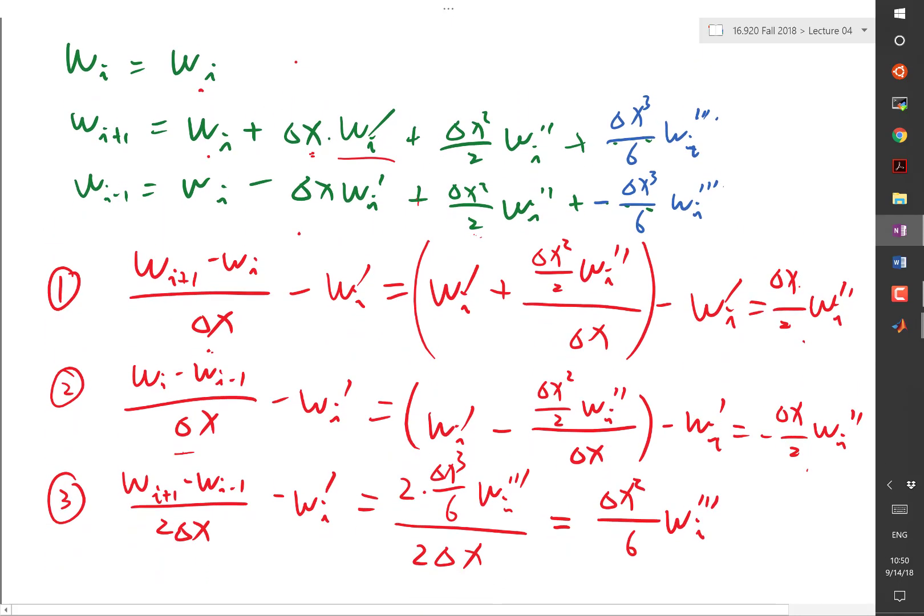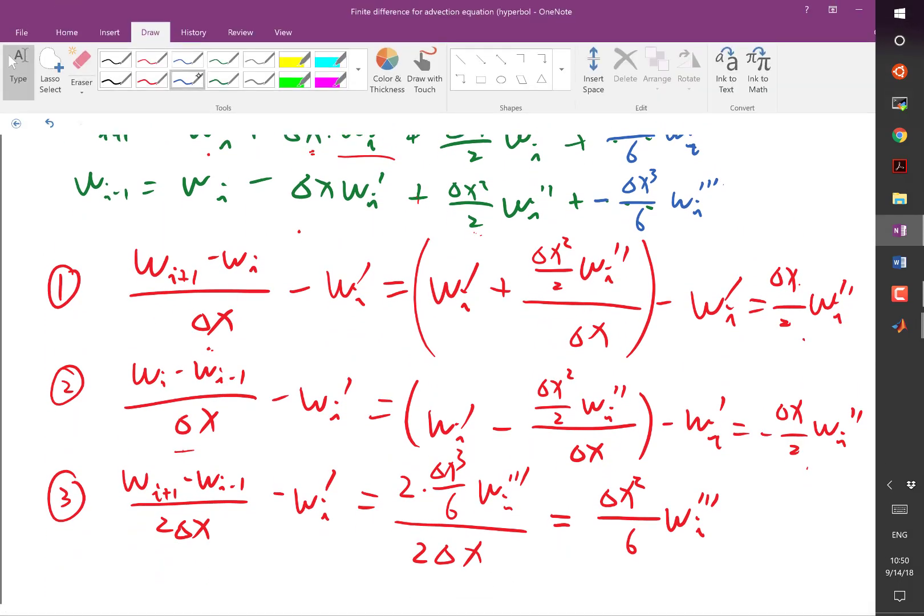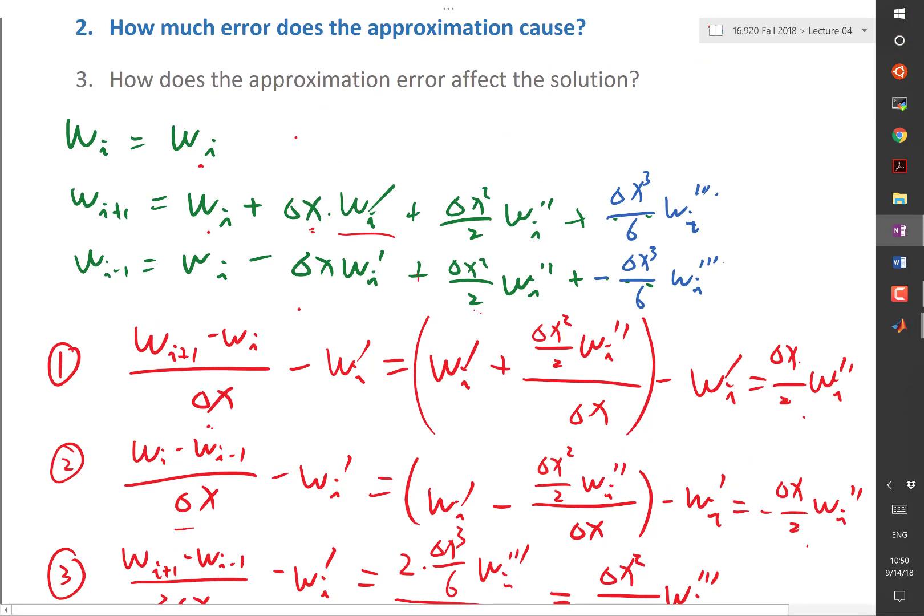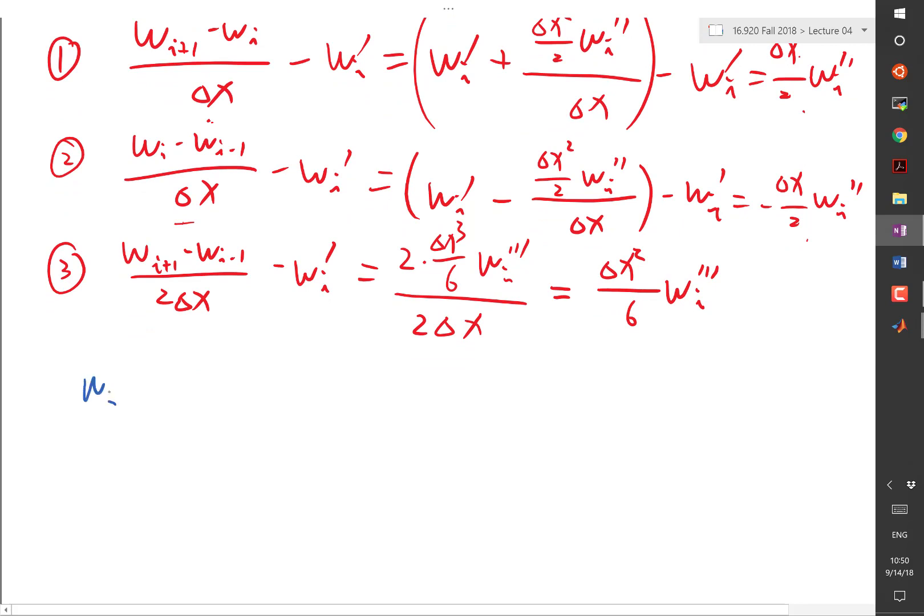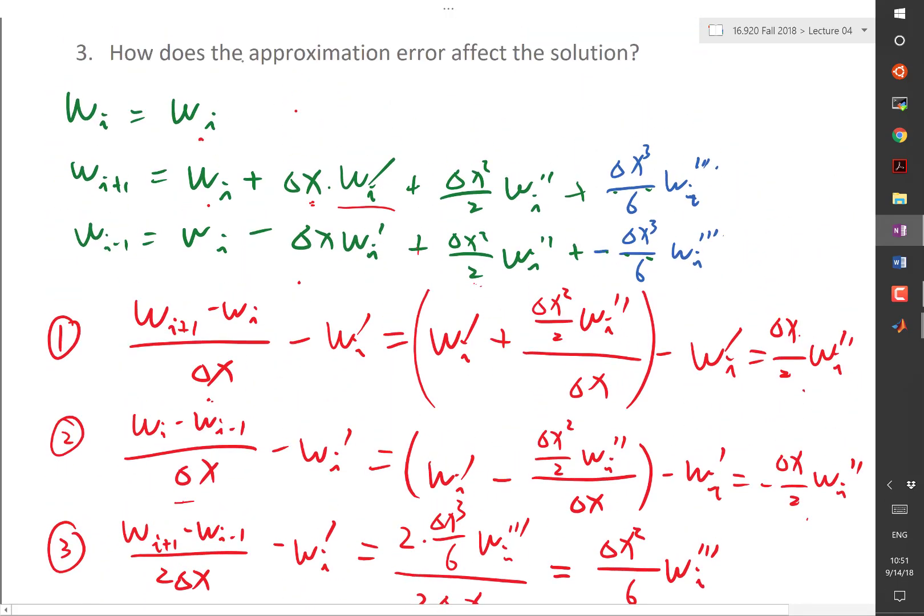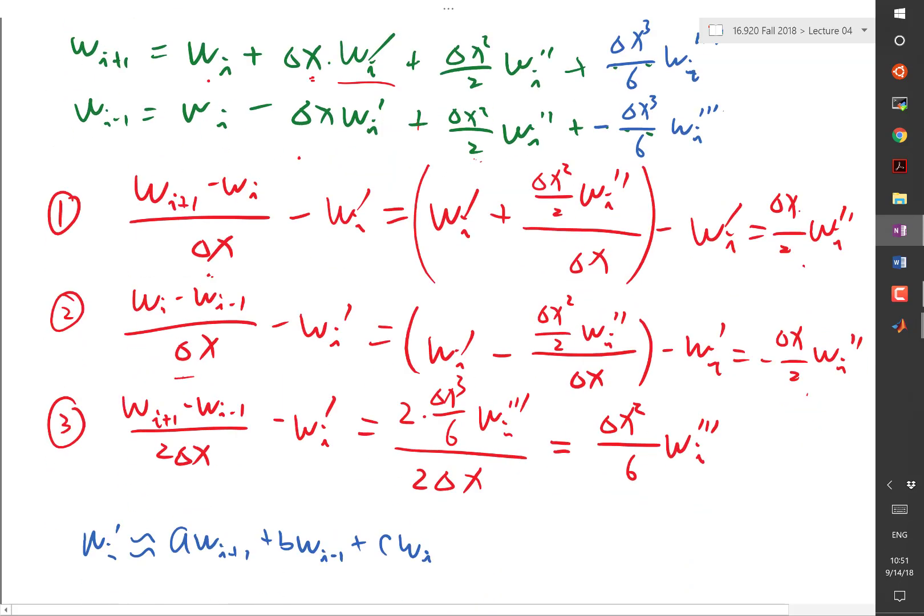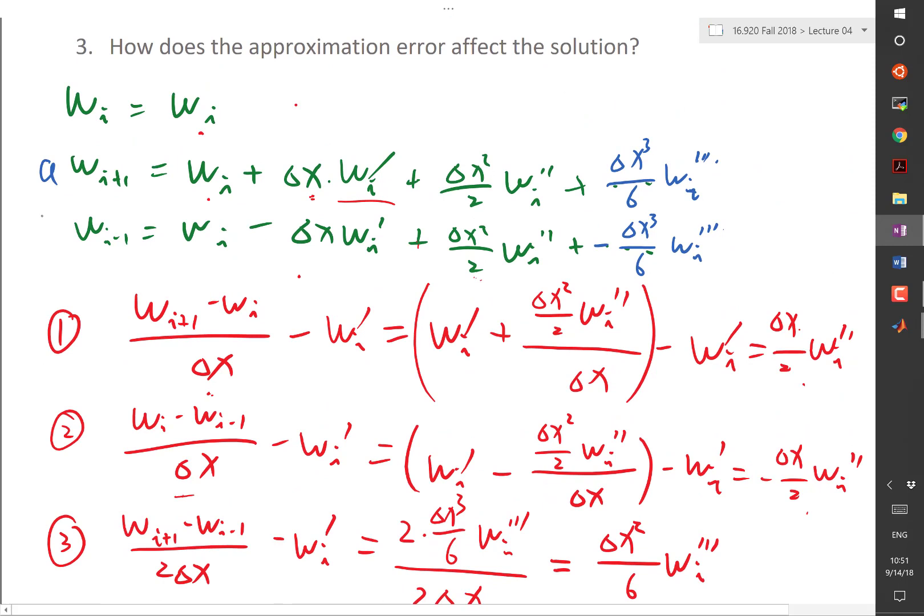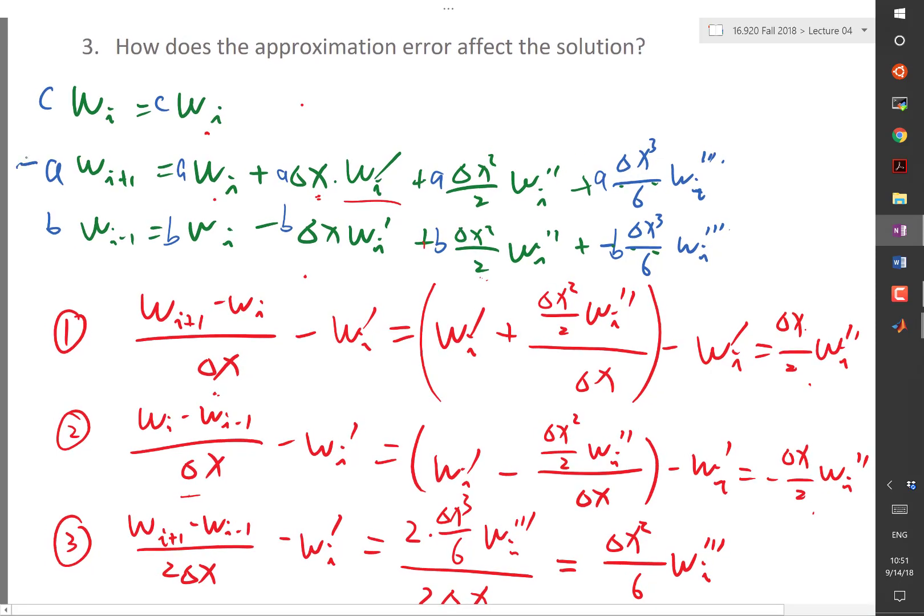The solution is like this. What if we have a scheme that performs an arbitrary linear combination? What if we want to approximate Wi prime as A times Wi plus 1 plus B times Wi minus 1 plus C times Wi? We just multiply A on this, B on this, and C on this, and carry over the A, B, and C in all of these coefficients. When we add them together, we just add them together like that.